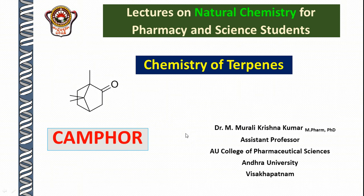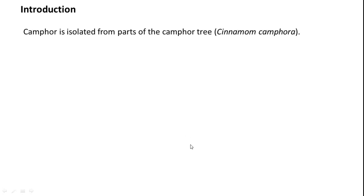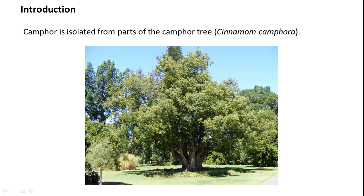Camphor is a very widely used chemical as far as its medical as well as non-medical applications are concerned. Camphor is actually isolated from parts of the camphor tree, that is cinnamomum camphora. Every part of this tree surprisingly smells like camphor.